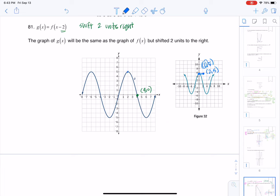And when you see that ordered pair (2, 5), you can see it on the new graph G, because it's been shifted two units right.